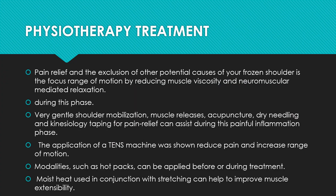Physiotherapy treatment is done across three different stages. The first stage focuses on gentle shoulder mobilization, muscle releases, acupuncture, dry needling, kinesiology taping, and pain reduction. Since stage one of frozen shoulder involves immense pain, all efforts concentrate on reducing it. Modalities like TENS and hot packs applied before and after treatment give good results. Moist heat used in conjunction with stretching can also help improve muscle extensibility.